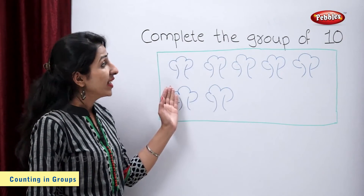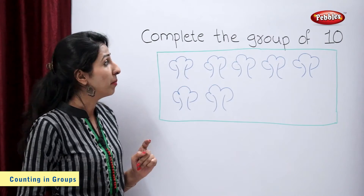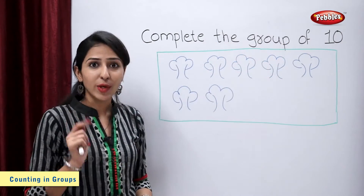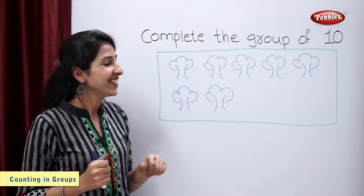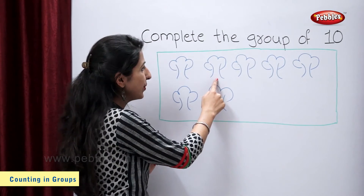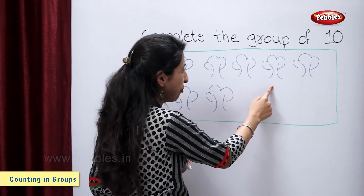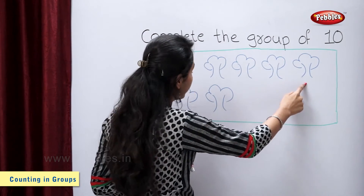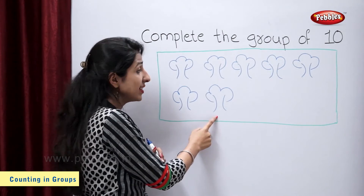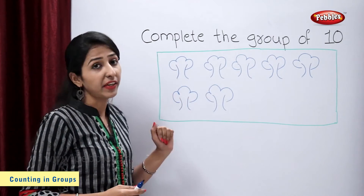There are some trees on the board. We have to complete the group of 10. So let's count the number of trees: 1, 2, 3, 4, 5, 6 and 7. So we have 7 trees on the board.